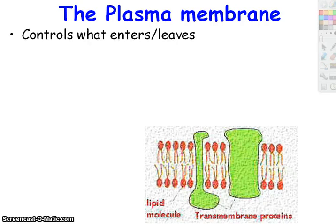The job of the cell membrane is to control what enters and leaves. This way there's a semi-permeable barrier, and that allows the cell to carry on different functions and maintain a different internal environment than what's outside of the cell.